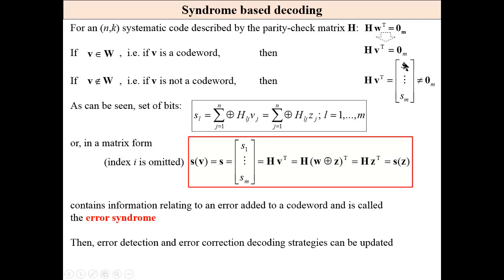This vector is called a syndrome. It consists of m bits. These bits are calculated from parity check bits for the given received sequence. And the parity check matrix is easy to calculate bits of the syndrome.